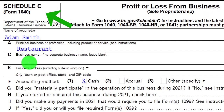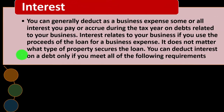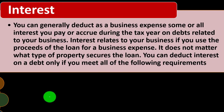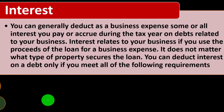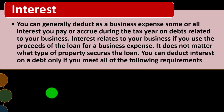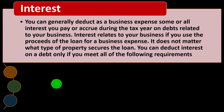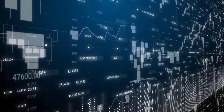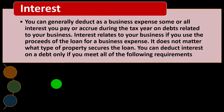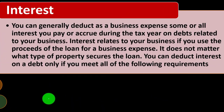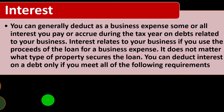This is Schedule C, Profit or Loss from Business — basically an income statement. We're now looking at interest and thinking about the deductibility of interest. You can generally deduct as a business expense some or all interest you pay or accrue during the tax year on debts related to your business. Interest relates to your business if you use the proceeds of the loan for a business expense. It does not matter what type of property secured the loan.